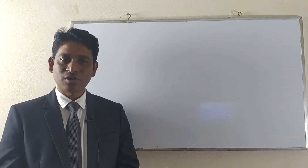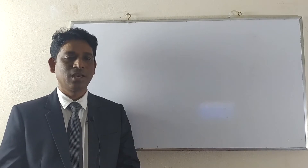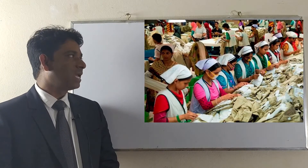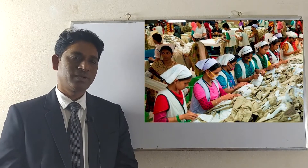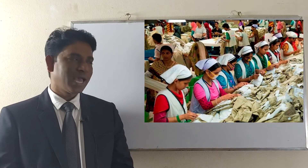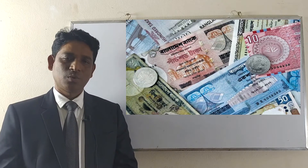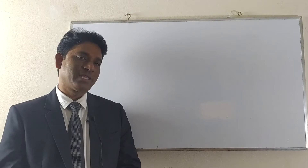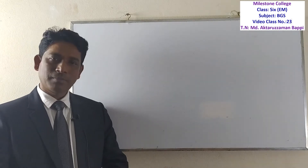Now it is time for the new lesson. Before going to the new lesson, I will show you two pictures. You have to guess what today's topic will be. Here is a picture of a garment structure, and here is another picture about money and economy. Can you guess? Yes, absolutely right. Our today's topic is Economy of Bangladesh, Chapter 7. I will discuss today lesson 1 and 2 about economic way of life.